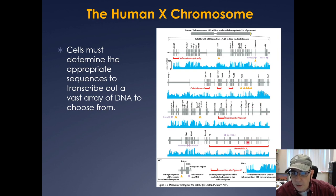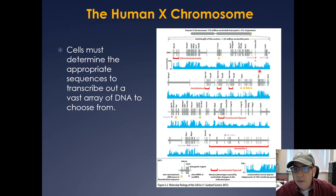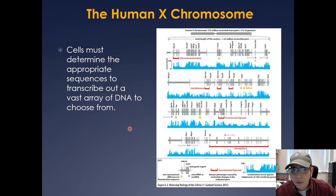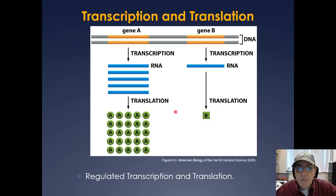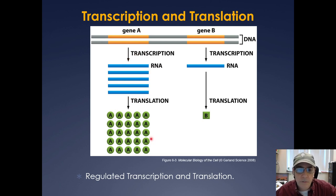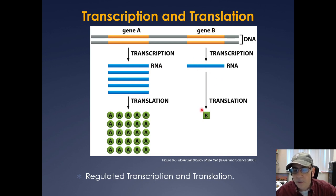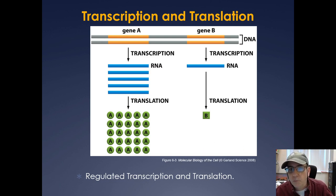Also shown are some non-coding RNAs — SNRA70, SNRA36, and SNRA56 — and microRNAs abbreviated as MIRs, such as MIR718. These non-coding RNAs have other functions we'll look at later in the term. In its most simplified form, gene A is transcriptionally regulated, producing multiple RNAs, which then undergo translational regulation to give rise to many proteins. Likewise, a lower-regulated gene B produces a small amount of RNA and a small amount of protein. Regulated transcription and translation are really important for the cell.